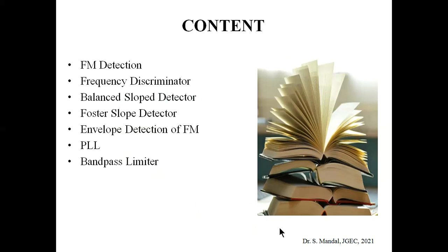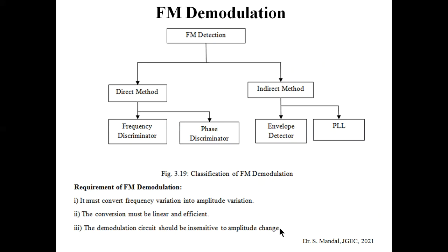In this class we shall discuss different FM detection techniques — how we can demodulate FM or PM using different methods. We shall elaborate four types: frequency discriminator, balanced slope detector, poster slope detector, and envelope detection of FM. We shall also discuss the working principle of the phase locked loop (PLL) and how it can be used for FM detection, as well as the band pass limiter used to suppress amplitude variation of the FM modulated signal.